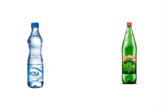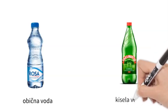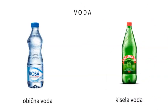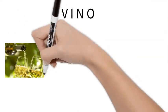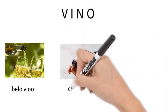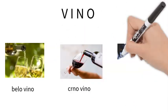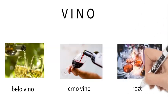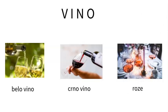You might want to wash your chosen brandy down with water — voda — which can be obična, still water, or kisela, sparkling water. Except rakija, Serbia is also famous for its wine. In Serbia there is white wine, belo vino; red wine, which Serbs call crno vino or black wine; and there is rosé, rose or crveno vino.